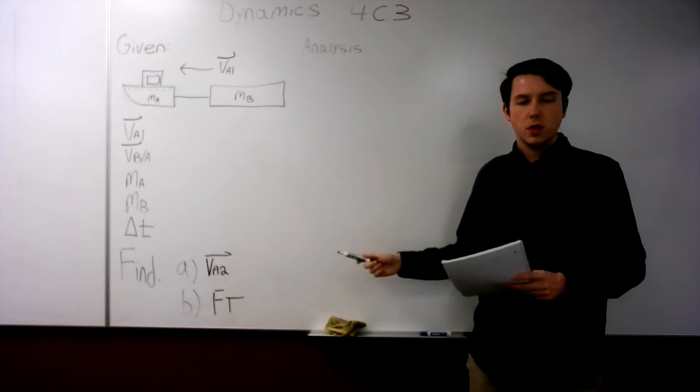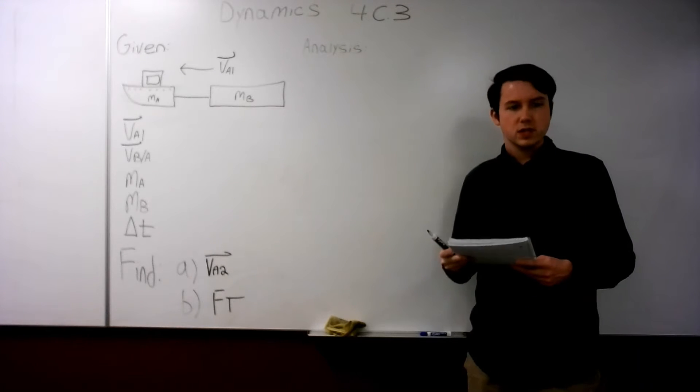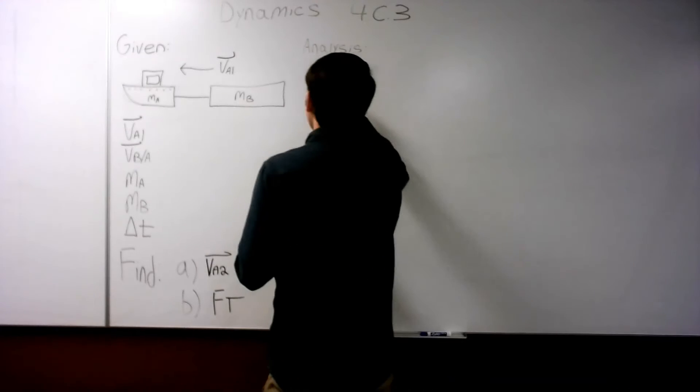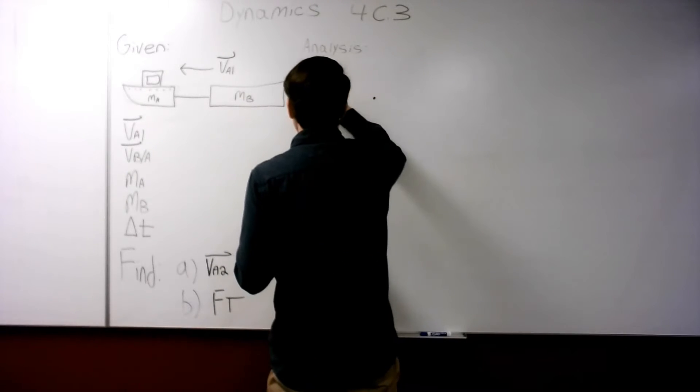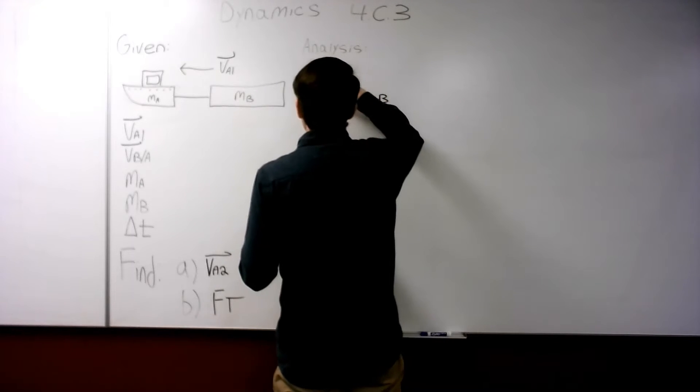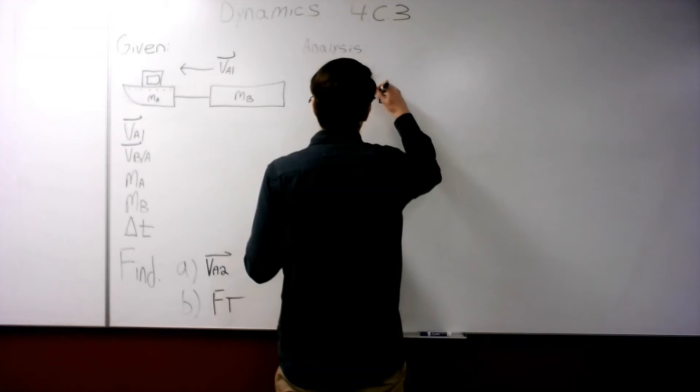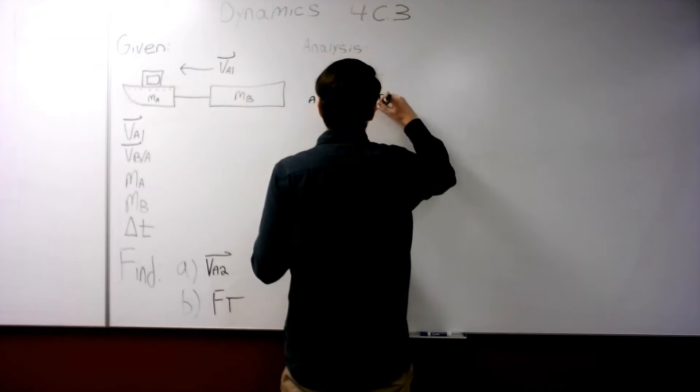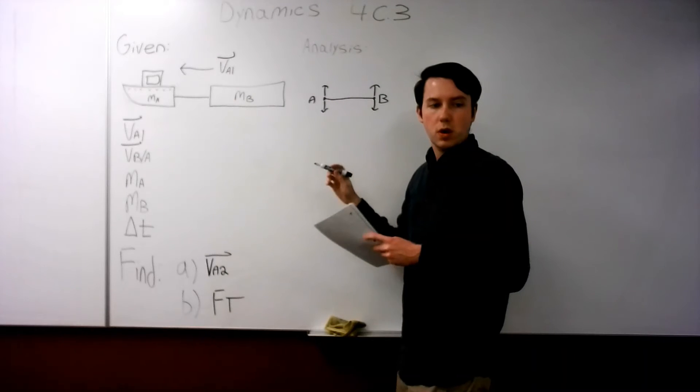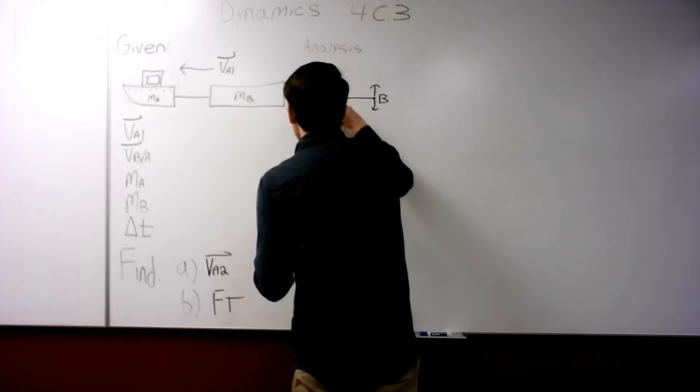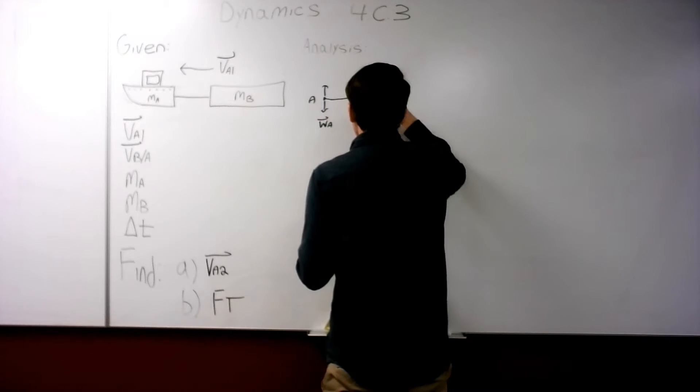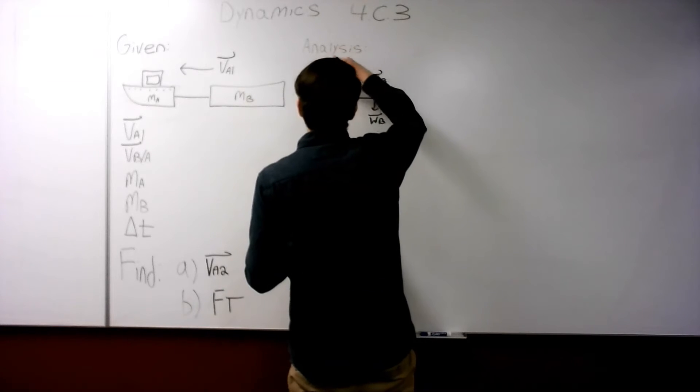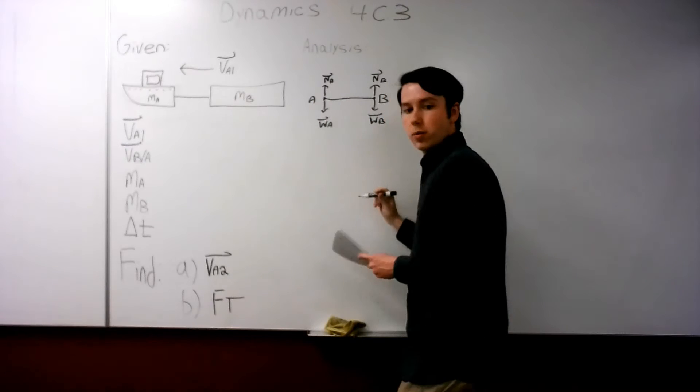During this time, we really want to find what VA2 is and the force of tension on the cable. Now that we have everything set up, we are ready for our solution. Now, the first thing we're going to do for the solution is look at a free body diagram of the system. So here we're going to have points A and B. And each of these points, they're connected. It's one system. Each of these points has a weight force and a normal force acting on it. So I'm going to call the weight force is W. This is WA. And this is WB. The normal forces would be called N. NB and NA.